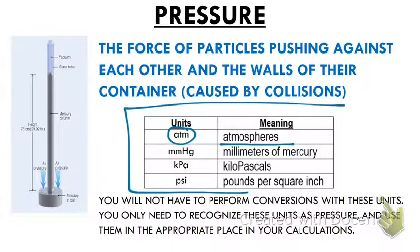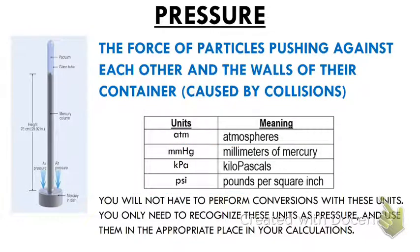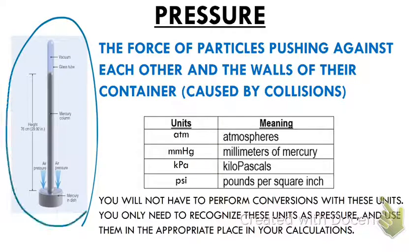But back in the day, before we were able to calculate pressure the way we do now, the ancient Greeks used this old-fashioned mercury barometer. I mean, I guess it was the height of technology back then, not really old-fashioned. To measure pressure. And that's where these units came from. This MMHG that you see there stands for millimeters of mercury. MM is millimeters. HG is the chemical symbol for mercury.